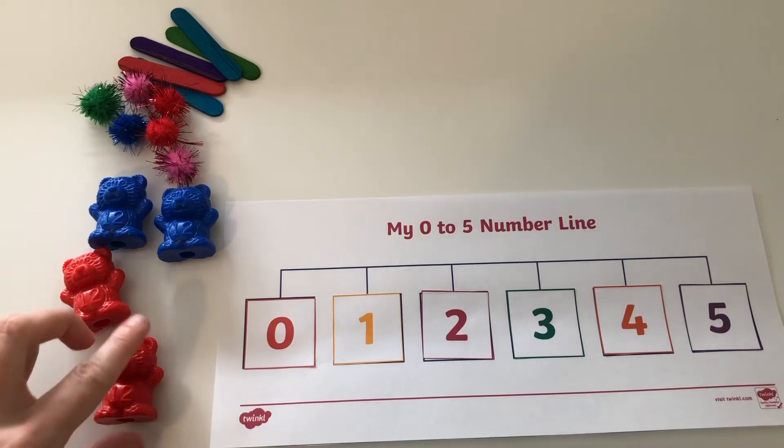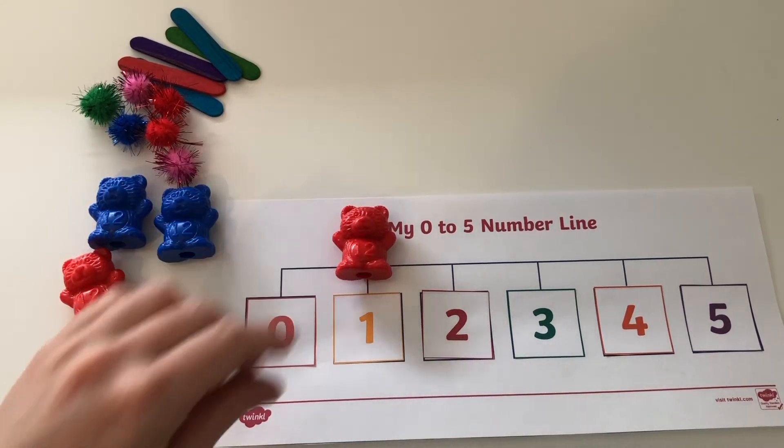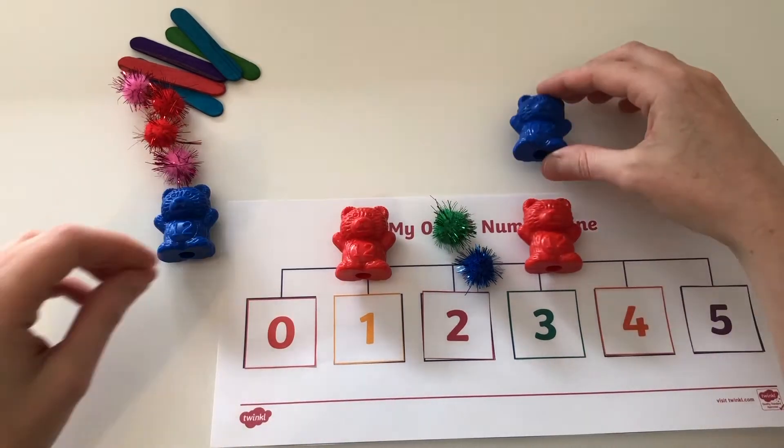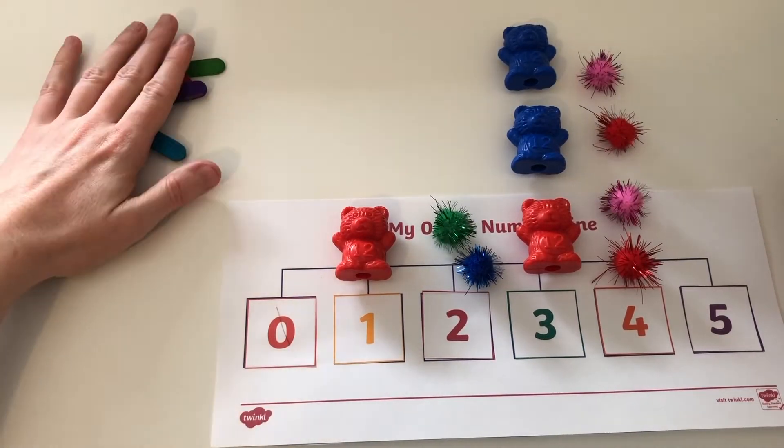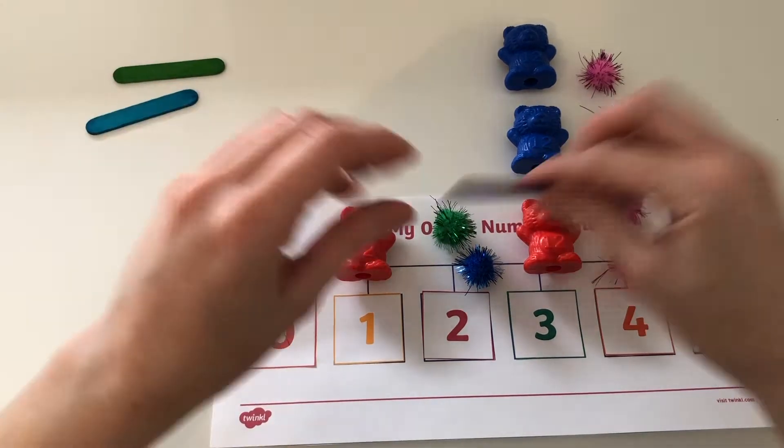Children could use small counting objects to count out the number of items to go with each number on the number line. This can help them understand the value of each number and see that the numbers are getting bigger each time.